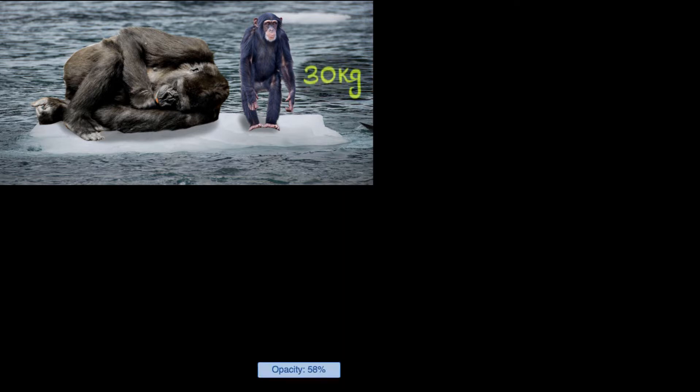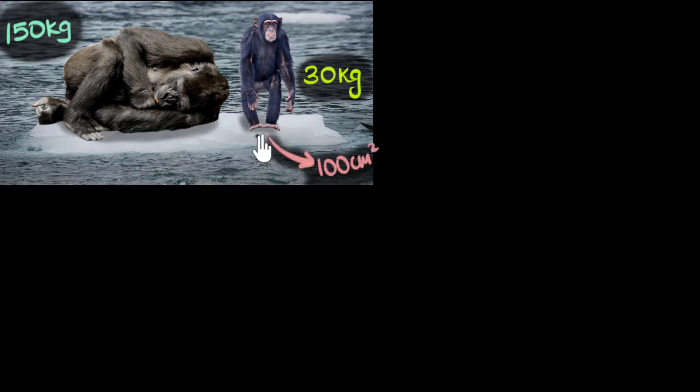Let's say the chimpanzee weighs about 30 kilograms and the gorilla weighs a staggering 150 kilograms. And imagine that because the chimpanzee is standing, the area of contact with that ice is pretty small. Let's say that area is about 100 centimeters squared. That's basically the area of his feet. And because this gorilla is sleeping on his side and the gorilla is large, that area of contact is going to be pretty big. Let's say that area is about a meter squared.